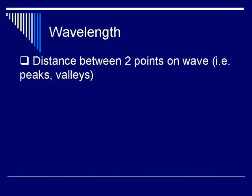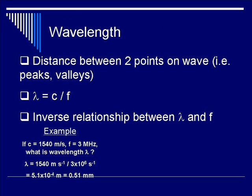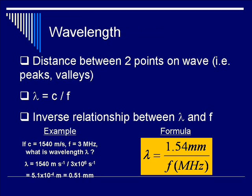Wavelength is defined as the distance between two points in a wave — for example, the distance between two peaks or two valleys of a sound wave. The equation is lambda equals c divided by f, where c is the speed of sound in the medium and f is the frequency. There is an inverse relationship between lambda and f. For example, if c is 1,540 meters per second and f is 3 MHz, then lambda equals 1,540 divided by 3 times 10 to the 6 Hz, which equals 0.51 millimeters. A better equation to remember is lambda equals 1.54 millimeters divided by f expressed in megahertz.